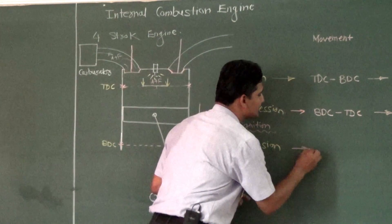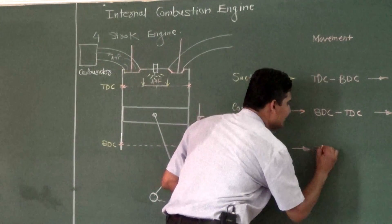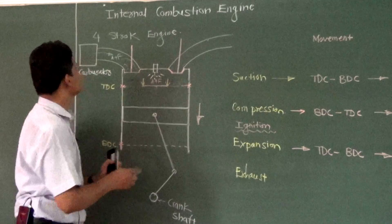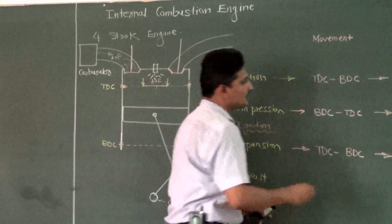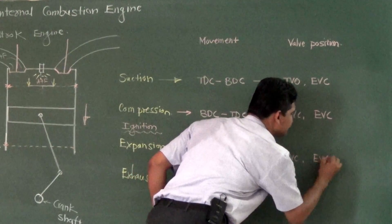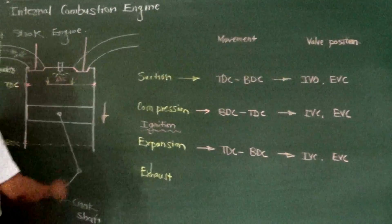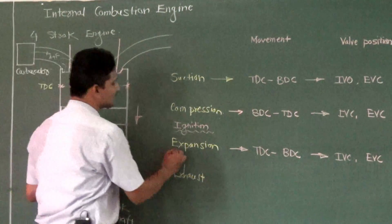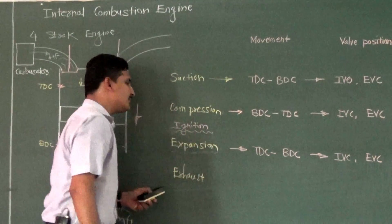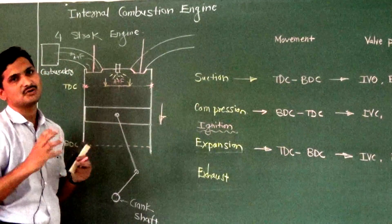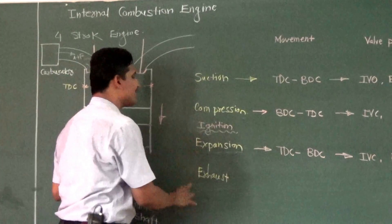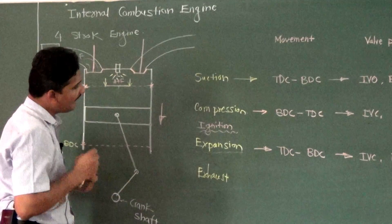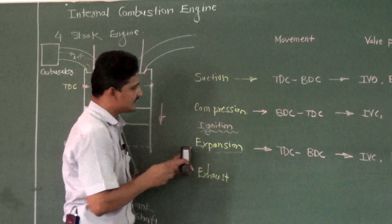Because of ignition, high force is available on the piston and it starts moving from TDC to BDC. In the expansion process, both valves are closed. This process is also called the power stroke because power is produced only in this particular stroke out of all four processes. So the expansion process is also called the power stroke or power process. At the end of the expansion stroke, the piston is at BDC.